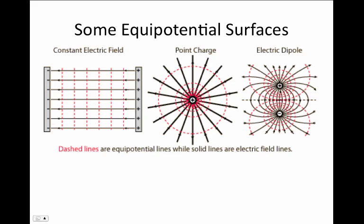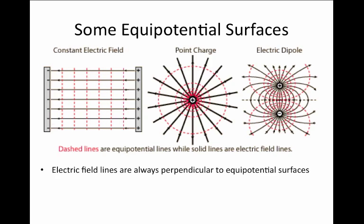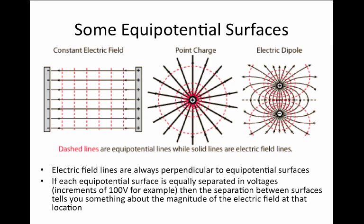The equal potentials can be more complicated depending on the configuration of charges. Here might be a positive and a negative charge located nearby one another — the equal potential surfaces look somewhat distorted near these charges because of the presence of the other charge. Notice that the equal potential surfaces get further and further apart where the electric field is weaker, and closer and closer together where the electric field is stronger. That's because more and more work is being done for the same amount of distance as the electric field value gets bigger. So electric field lines are always perpendicular to the equal potential surfaces, and if the equal potential surfaces are constantly spaced in voltage, the separation of the surfaces tells you something about the magnitude of the electric field at that location — closer together surfaces mean a larger electric field.